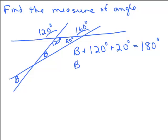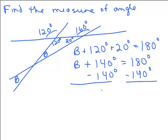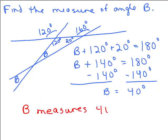So I've got B plus 140 degrees equals 180 degrees. Subtract 140 from both sides. And we've got B is 40 degrees. So the answer, I forgot to say find the measure of angle B. I forgot to say what I was looking for. So the answer is B measures 40 degrees.